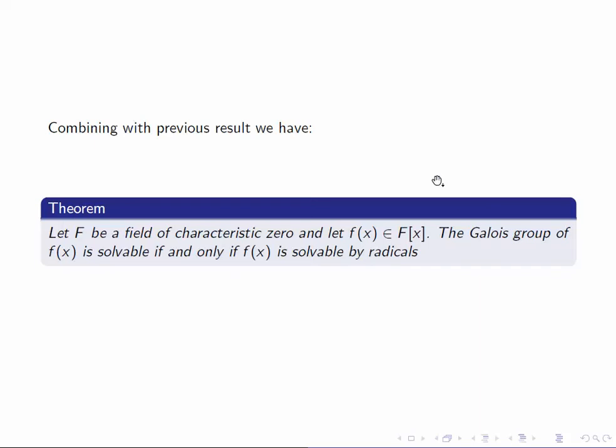Combining this result with the previous result, we have that if F is a field of characteristic zero, then the Galois group of a polynomial f(x) is solvable if and only if f(x) is solvable by radicals.